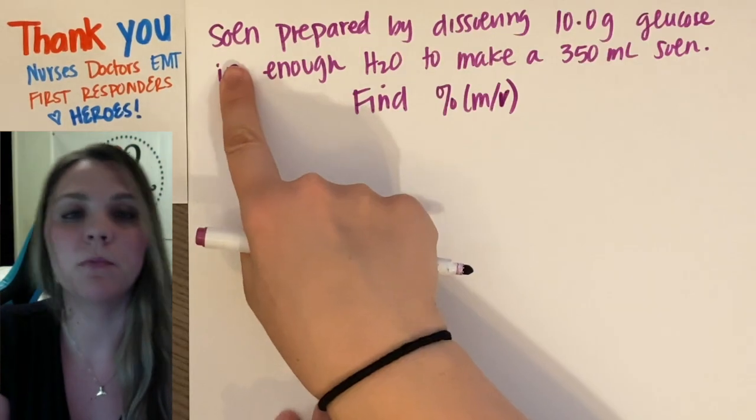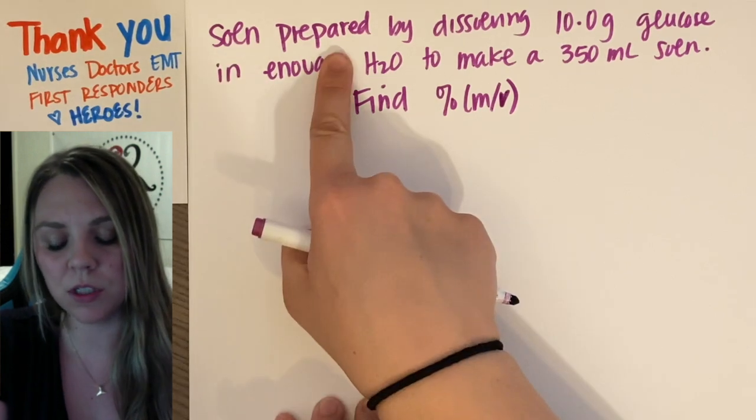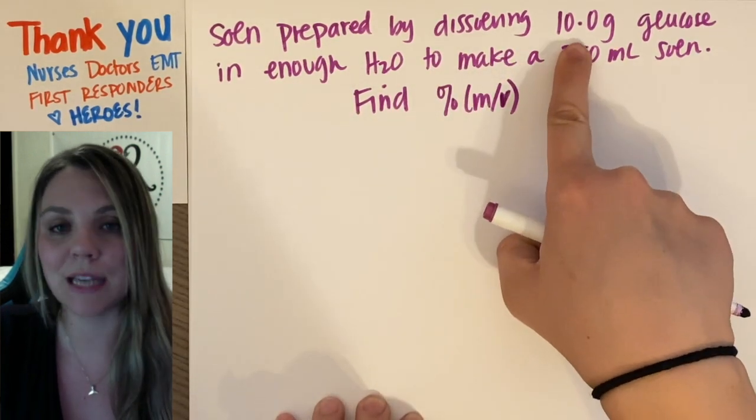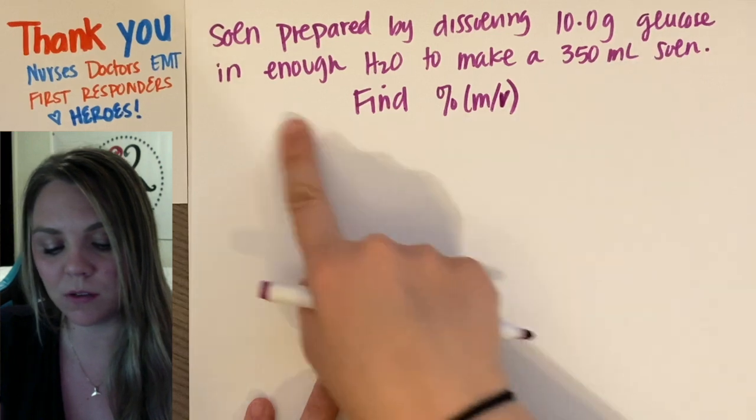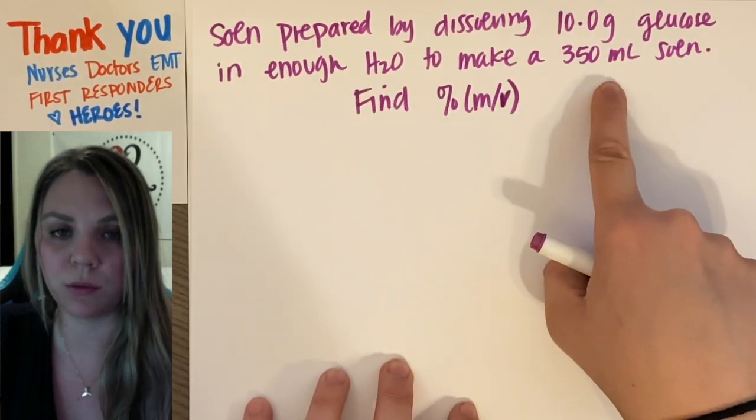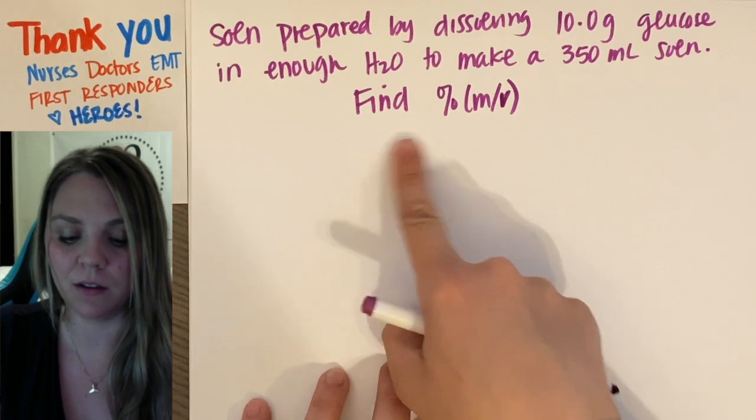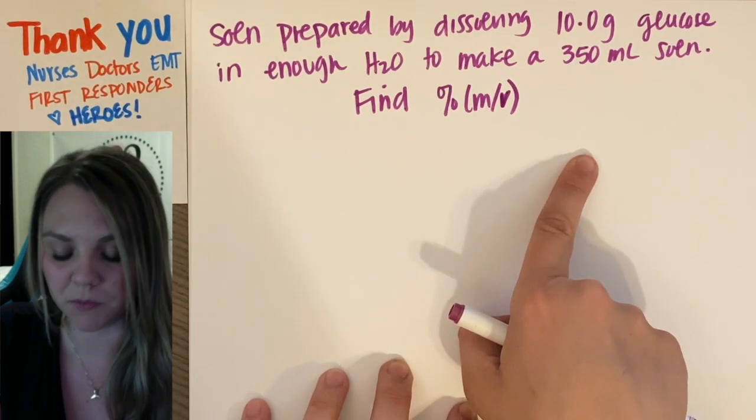Let's look at an example. You would have a question like this: A solution is prepared by dissolving 10.0 grams of glucose into enough water to make 350 milliliters of solution. Find the mass volume percent.